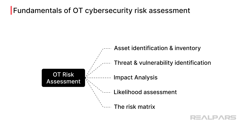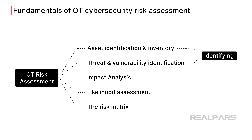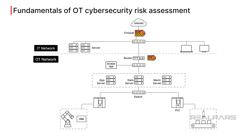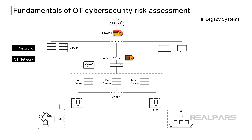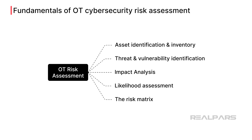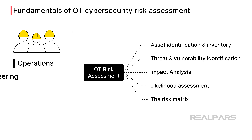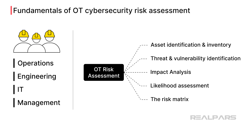OT Risk Assessment is defined as the systematic process for identifying, evaluating, and prioritizing threats and vulnerabilities. There are several characteristics unique to OT environments that differ from IT environments, among these the prevalence of legacy systems, 24/7 availability requirements, and physical integrations to machines, actuators, and sensors that make up the manufacturing process. Risk assessments must involve all affected stakeholders including operations, engineering, IT, and management personnel, and must follow a systematic approach to be successful. Let's look at the five steps involved in this assessment.